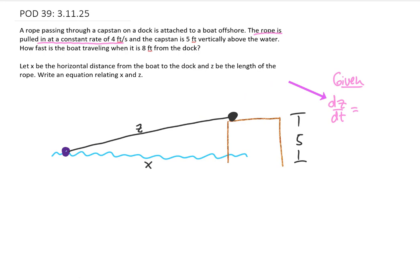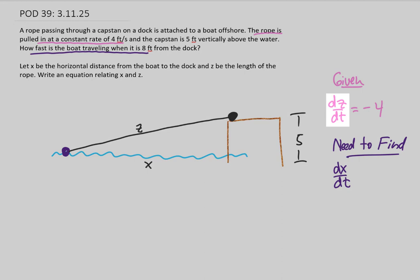We are asked how fast the boat is traveling when it is 8 feet from the dock. So how fast the boat is traveling can be measured by how fast this distance from the dock changes. In terms of derivatives, that means that we need to find dx/dt. So if we are going to relate dz/dt and dx/dt, we first need to relate x and z.